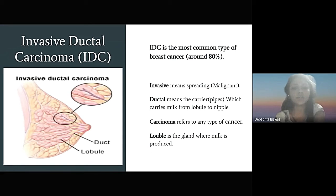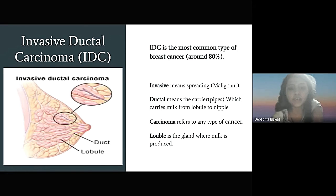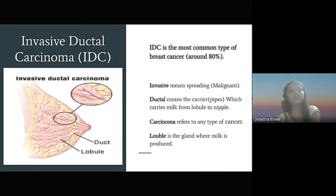IDC — Invasive Ductal Carcinoma — is the most common type of breast cancer. 'Invasive' means the cancer spreads, which in the malignant type can lead to death. 'Ductal' refers to the ducts or pipes that carry milk from the lobule to the nipple. 'Carcinoma' refers to any type of cancer. The lobule is the gland where milk is produced. If a woman faces these problems, it is very difficult for the person to survive.